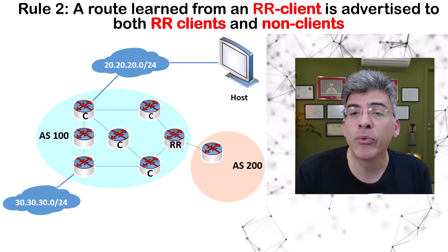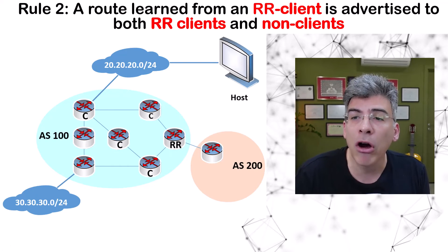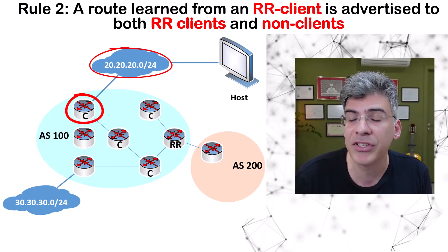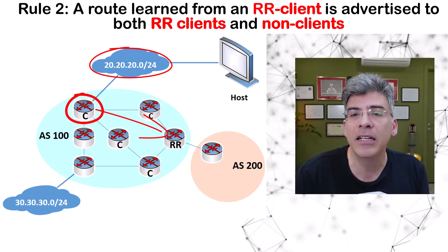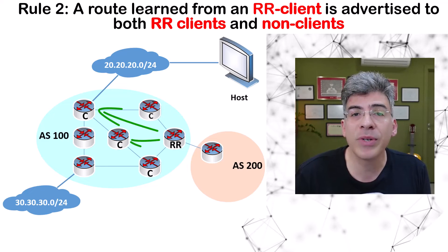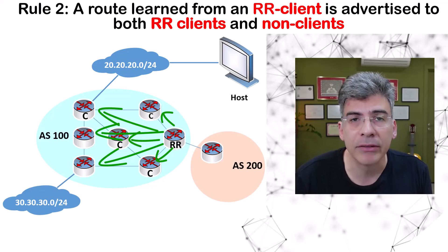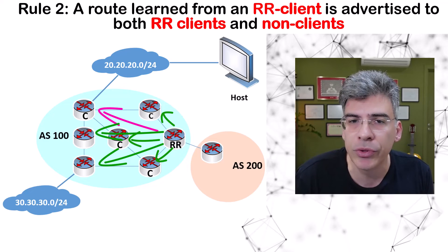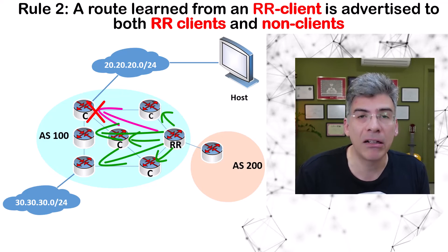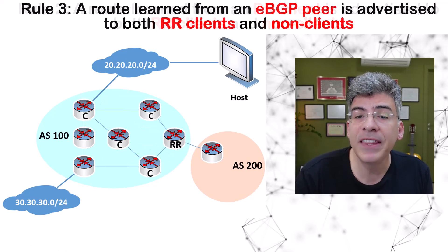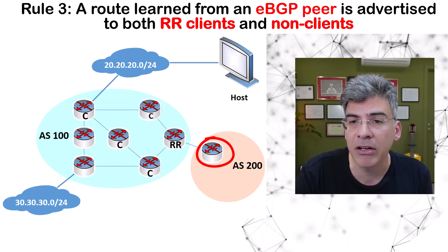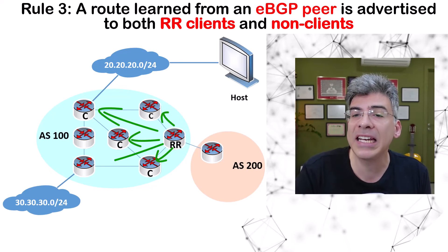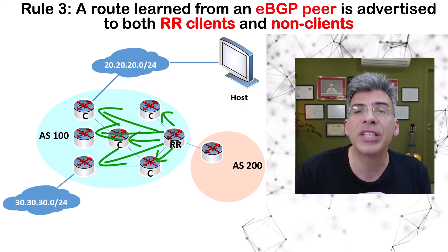The next rule says that a route learned from an RR client is advertised to both RR clients and non-clients. Here, the 20.20.20.0/24 network that a client router has advertised to the route reflector is then re-advertised or reflected to client routers as well as to non-client routers — essentially the RR will reflect such a route to everyone in the AS. It's interesting to note that even the RR client that originally advertised the route will receive a copy, but it will discard it because it sees itself as the originator. Finally, if the route reflector learns a route from its EBGP neighbor in AS 200, that route will be advertised to both RR clients and non-clients — all IBGP routers within the AS will receive such an advertisement.